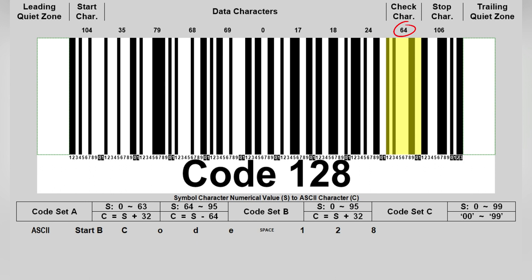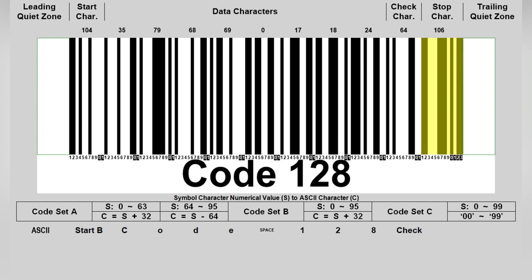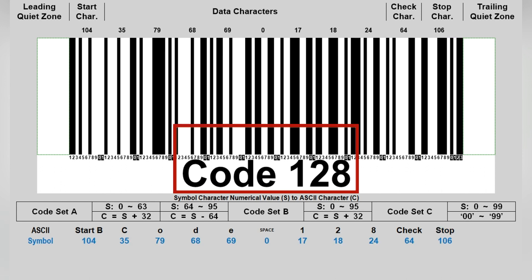The check character is 64; the symbol check character is always the last symbol character before the stop, and its valid range is from 0 to 102 inclusive. The stop character is 106, and it is the same across all three code sets. So the decoded result message is 'CODE 128'.